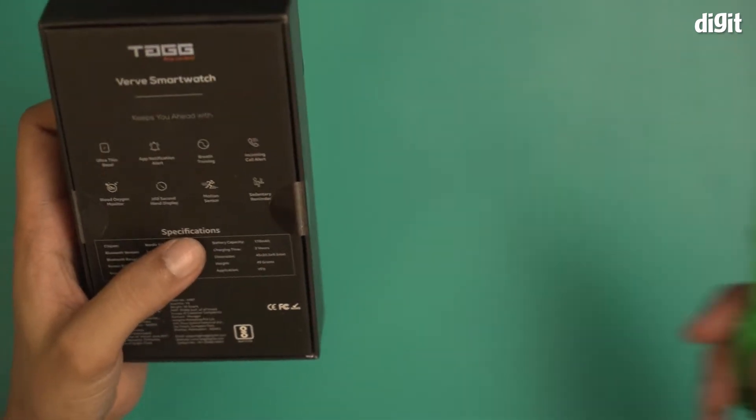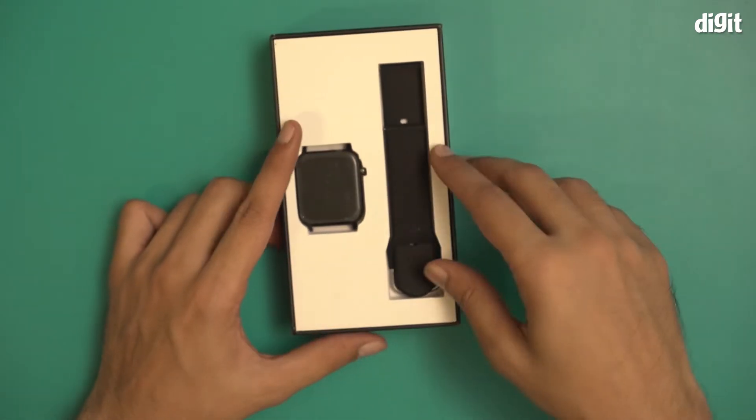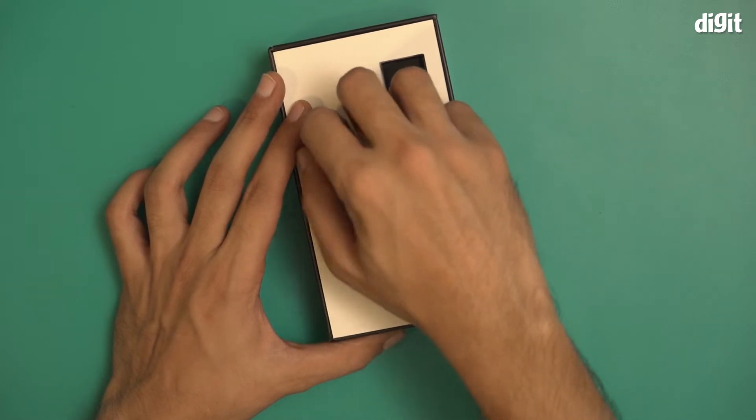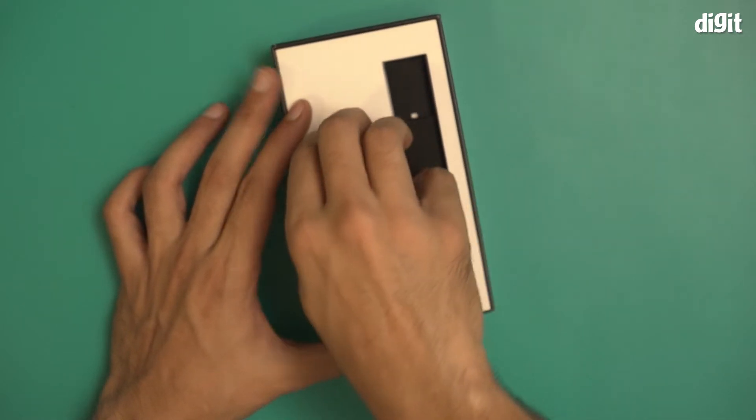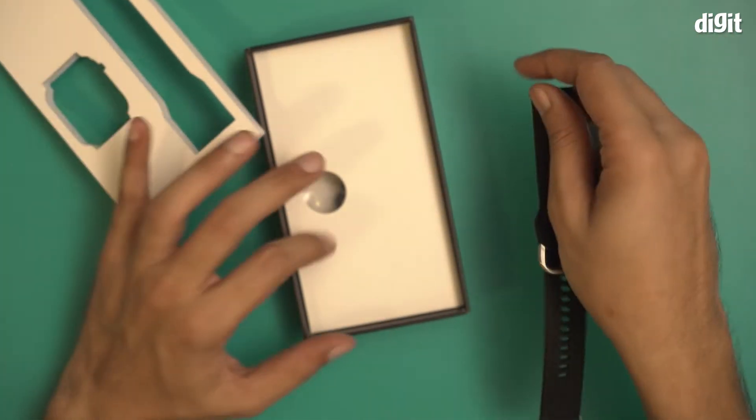Let's just open it and show you what's inside. There we go, this is what we have inside the box. This is the watch, let me just take it out. These are the silicone straps.